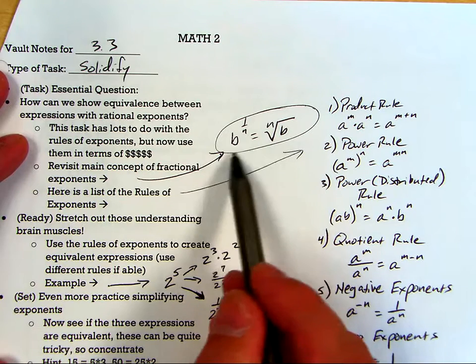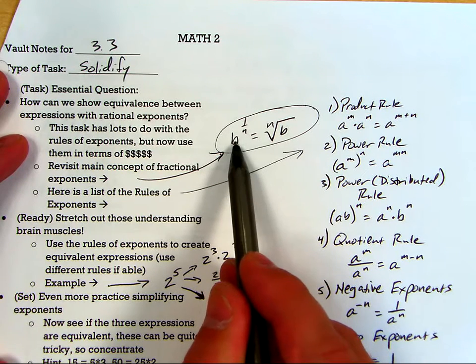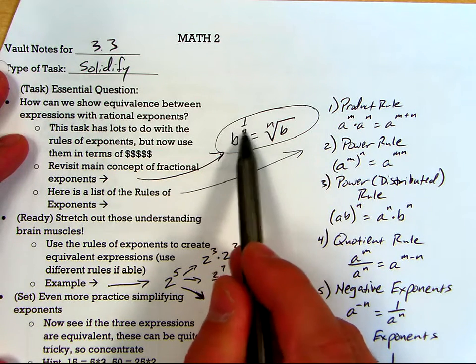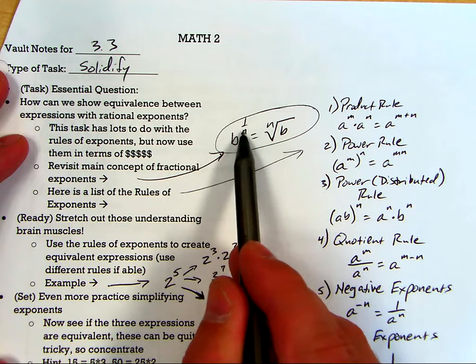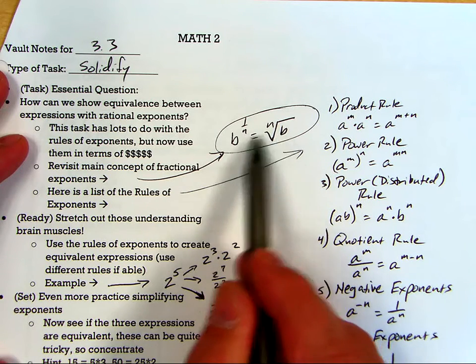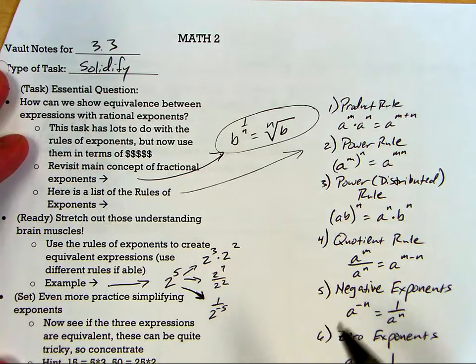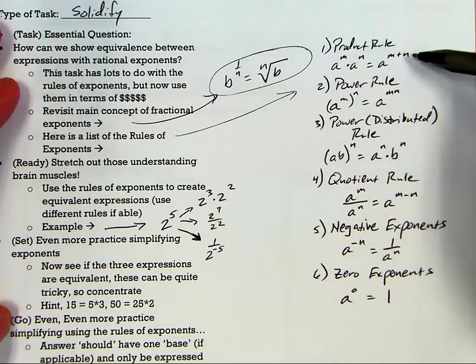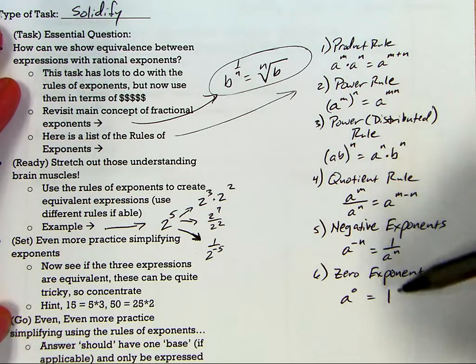So remember this, always, always, always remember this. Some base to a 1 over n power, the index becomes a denominator and vice versa. It's huge. That's one of the rules of exponents. Here are the other rules written out for you and I will explain in class.